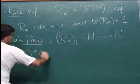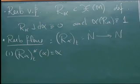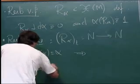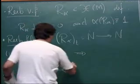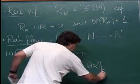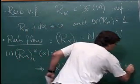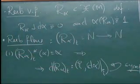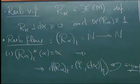The Reeb flow has some important properties. First, it preserves the contact form alpha. In particular, the linearized flow — the derivative of the Reeb flow — preserves the contact structure and d-alpha restricted to it, making it a symplectic map. The linearized flow gives a symplectic map from the symplectic vector bundle to itself.